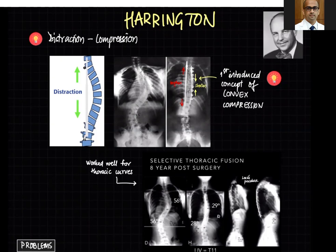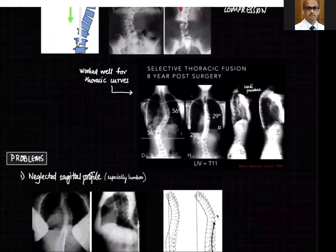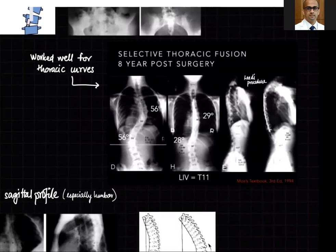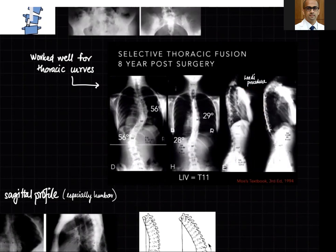This worked quite well for thoracic curves. This case is taken from the Moe textbook of scoliosis from 1994 — a false double major curve — with a Harrington rod placed only in the thoracic region for a selective thoracic fusion. Sublaminar wires are attached to the Harrington rod here; this was called the Luque procedure. The 8-year outcome shows it worked quite well in the thoracic spine.